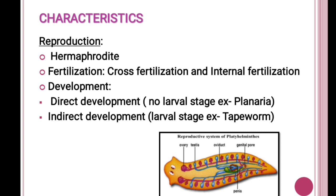In reproduction, Platyhelminthes are hermaphrodites, meaning they have both male and female sex organs, but their body still undergoes cross-fertilization and internal fertilization. Their development shows both direct and indirect development. In direct development there is no larval stage, for example Planaria, and in indirect development there is a larval stage.